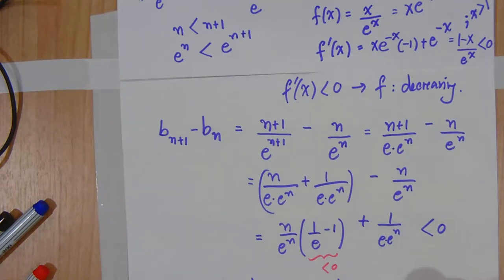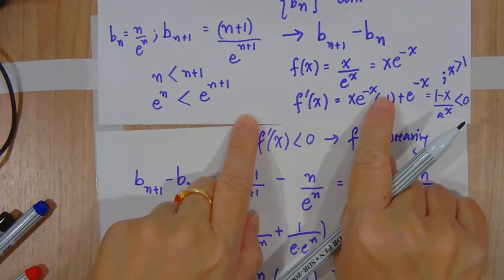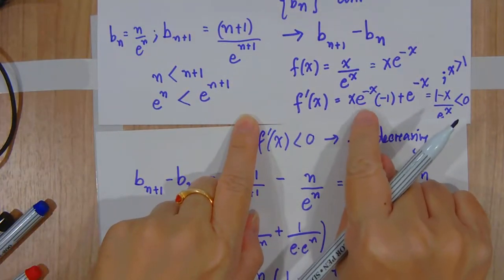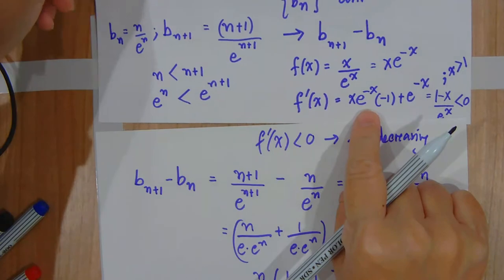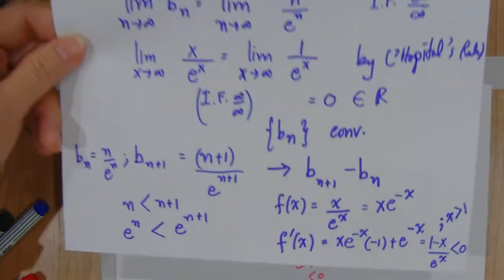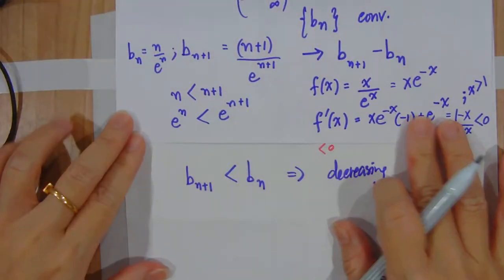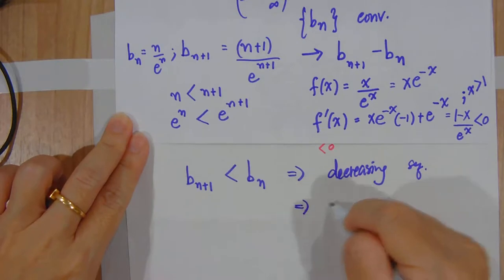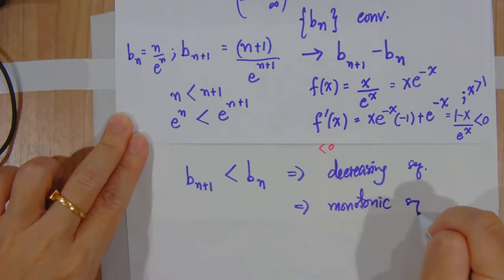So just choose one method to find it. Since the sequence is decreasing, we can conclude that it is also monotonic.